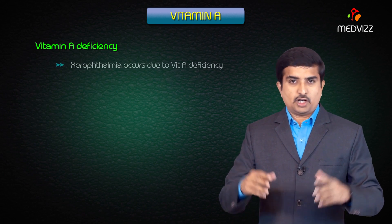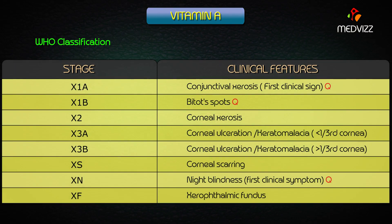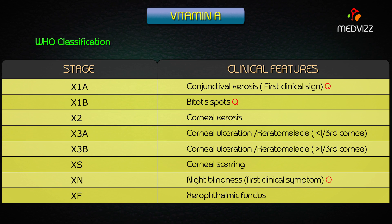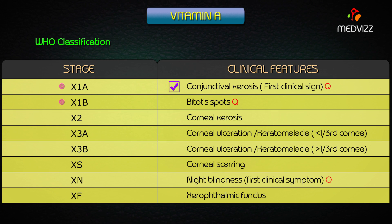Xerophthalmia occurs mainly due to vitamin A deficiency. The WHO classification describes various stages of vitamin A deficiency. The first stage, X1A, is conjunctival xerophthalmia — the first clinical sign. The next stage, X1B, shows the development of Bitot's spots, and X2 is corneal xerophthalmia.